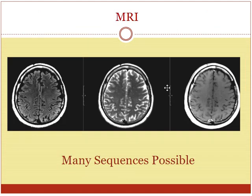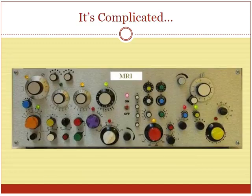Here's another MRI. You can do all sorts of sequences. The sequences can look different — like fluid can be bright or dark. Now with MRI, to take advantage of the flowing blood, you can post-process. The truth is it's very complicated what happens, but they can take that flowing blood and make it bright instead of being dark.